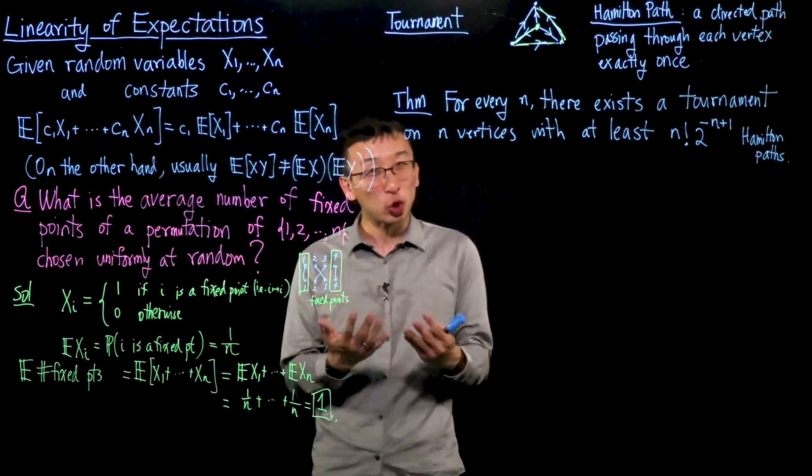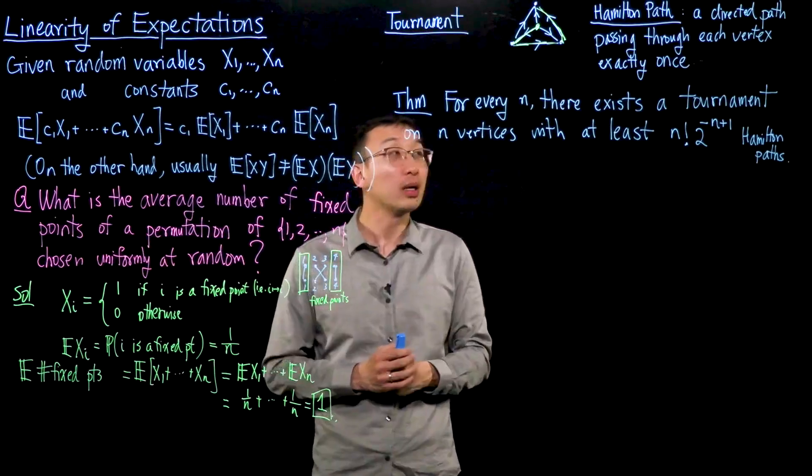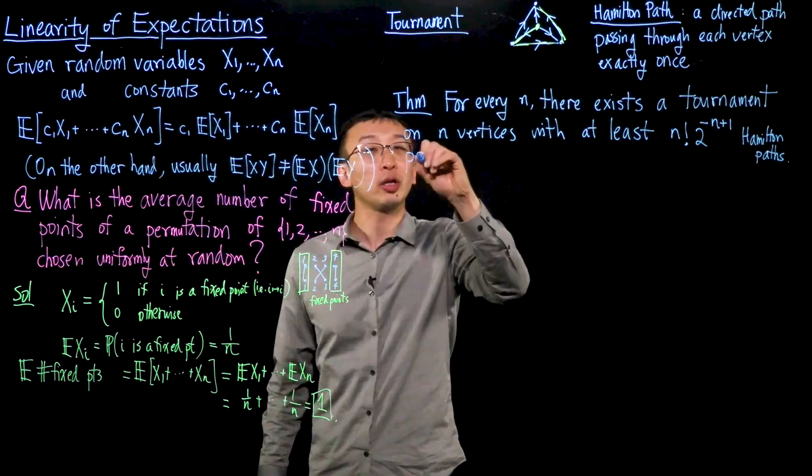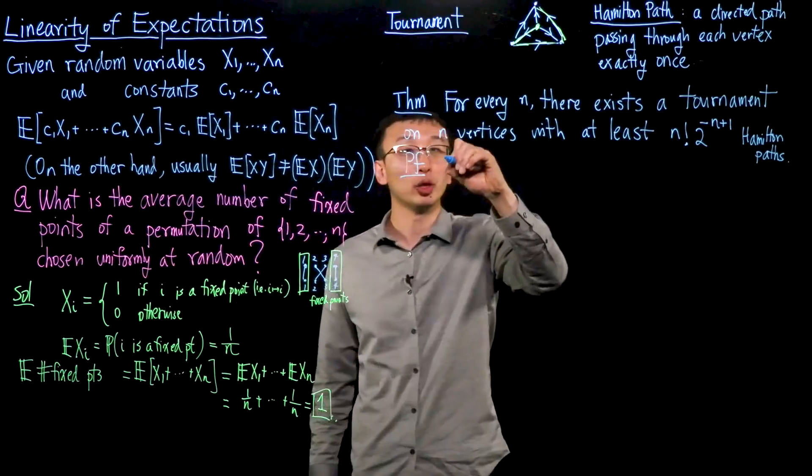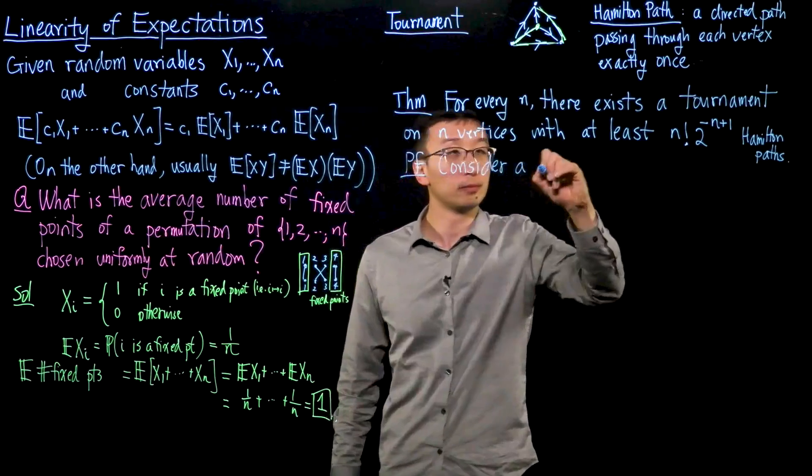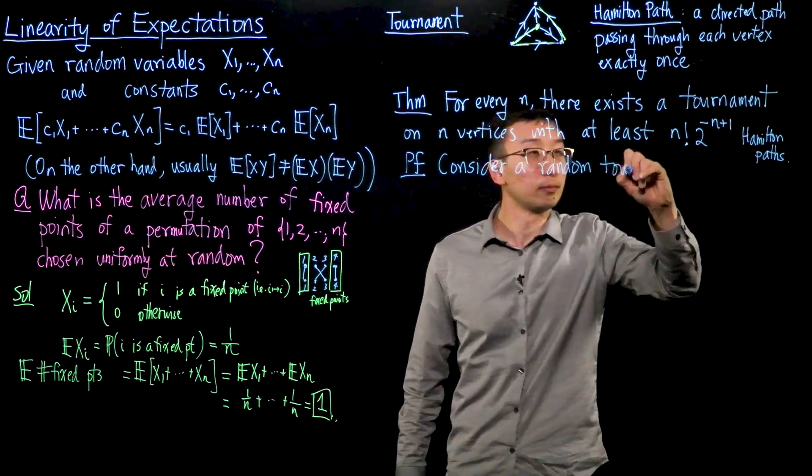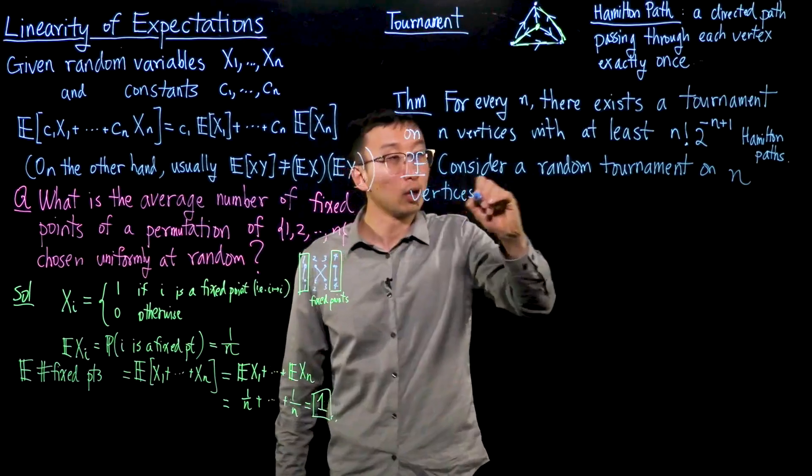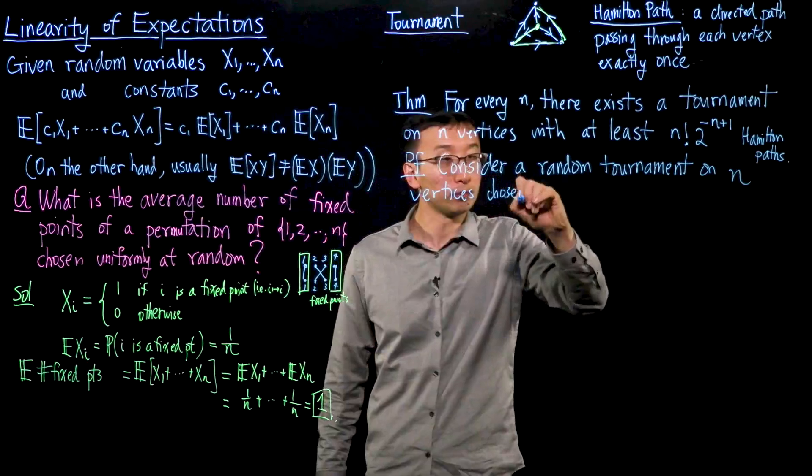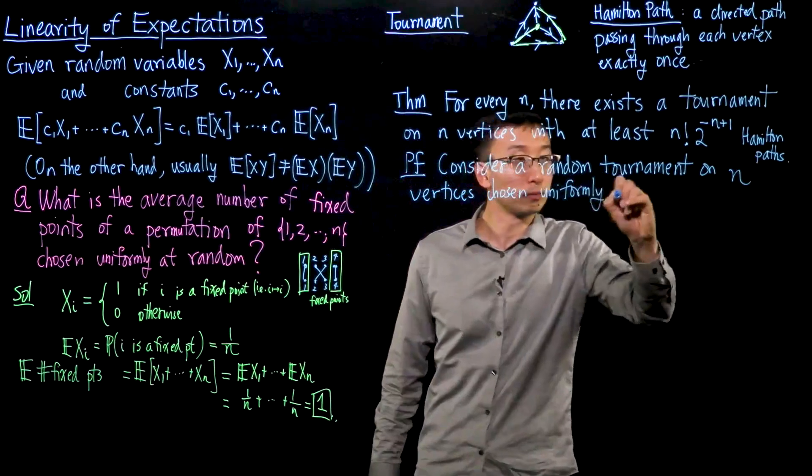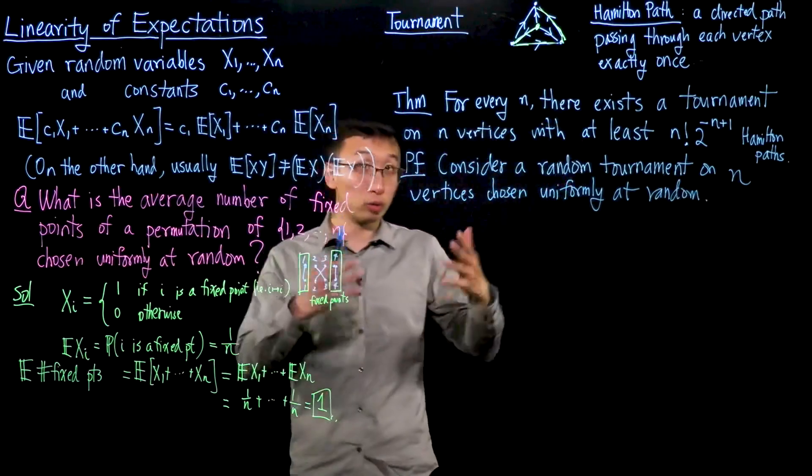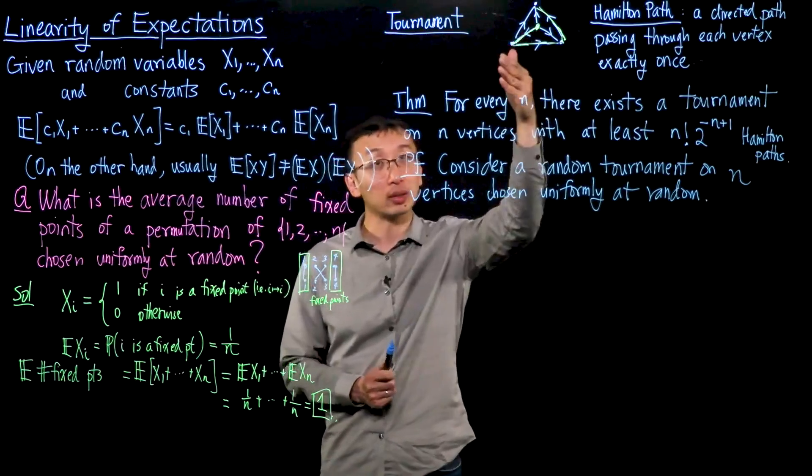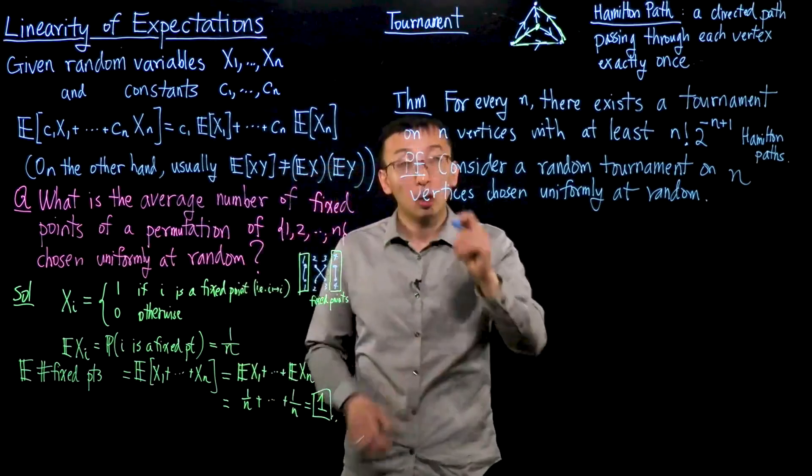We will not prove this theorem by explicitly constructing such a tournament. Instead, we'll invoke the probabilistic method and show that a random tournament has an expectation of this property. So here's the proof. Let's consider a random tournament on n vertices chosen uniformly at random. One way to do this is to take a complete graph on n vertices and for every edge, flip a fair coin and use that coin to decide which way the edge orients.